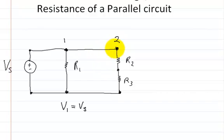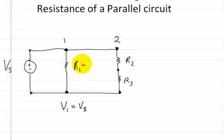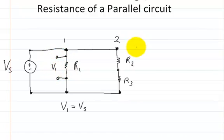This branch right here is made up of two elements, and each of these elements is going to have some portion of the voltage of the supply. So if I put my voltmeter lead here and another lead here and take a reading, I would call that V1. And if I put a lead here and another lead right here, I would call this voltage from here to here V2.